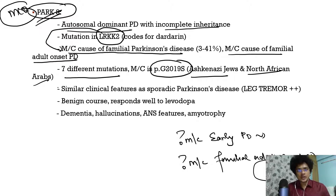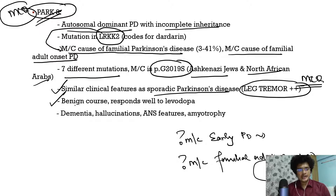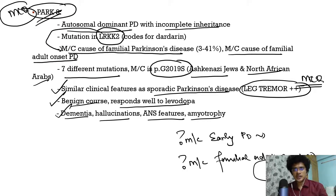PARK8/LRRK2 mutation presents with similar clinical features to sporadic Parkinson's disease, but the extra feature to remember is leg tremor. It has a benign course and responds well to levodopa. Extra features include dementia, hallucinations, autonomic dysfunction, and amyotrophy. So to summarize: PARK2 is the most common cause of early-onset Parkinson's, while PARK8 (LRRK2) is the most common cause of familial adult-onset Parkinson's disease.